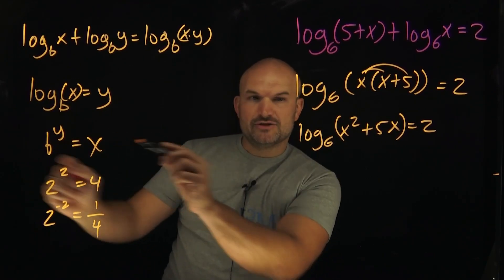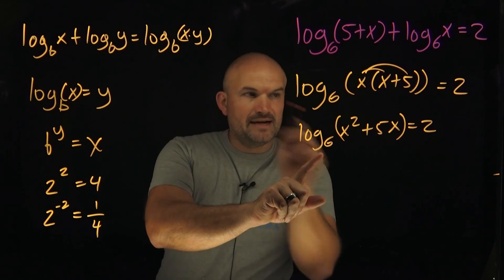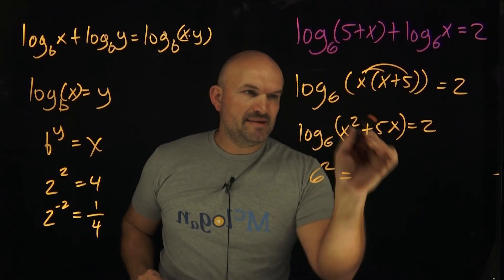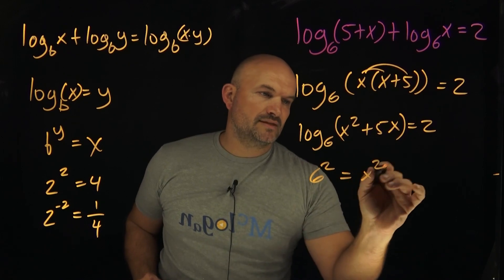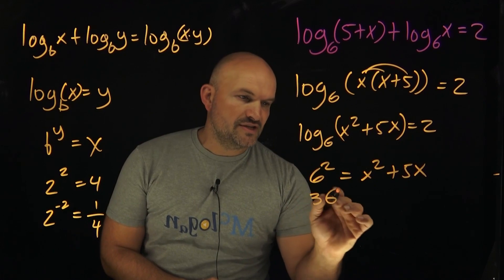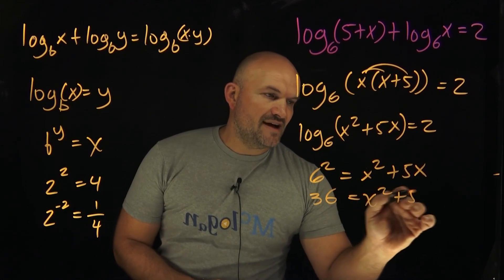If I rewrite this in exponential form, I'm going to take my base b and raise it to the argument's power. So therefore it's going to be 6 squared, and that's going to equal x squared plus 5x. Now hopefully you recognize that I have a quadratic equation. So this is 36 equals x squared plus 5x.